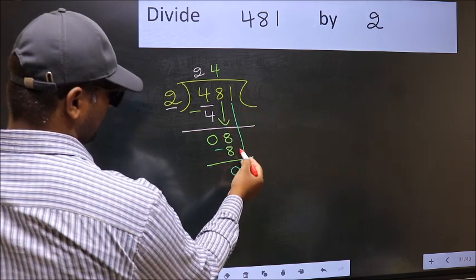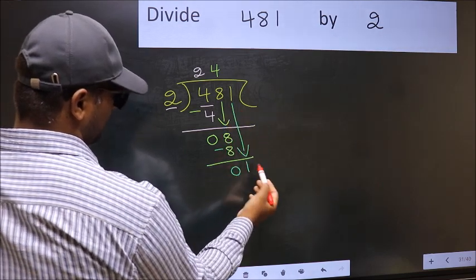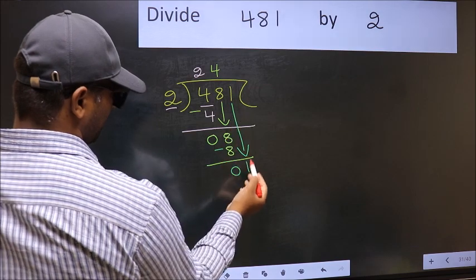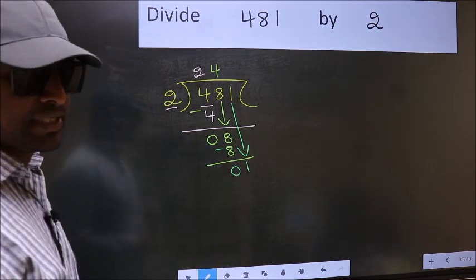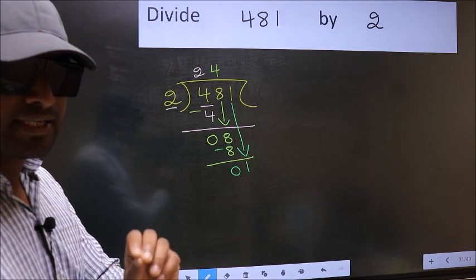After this, bring the beside number down: 1. After this step, the mistake happens. And the mistake is this.